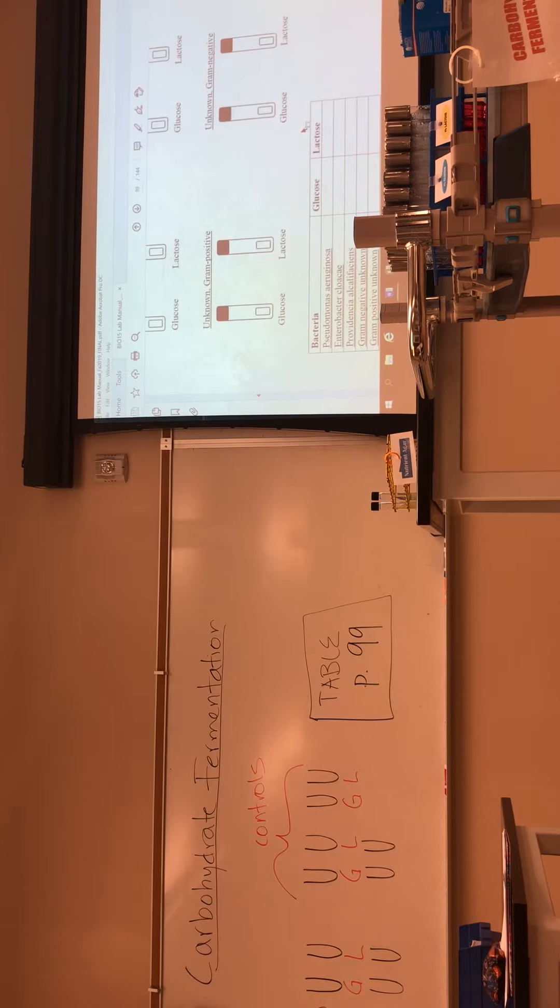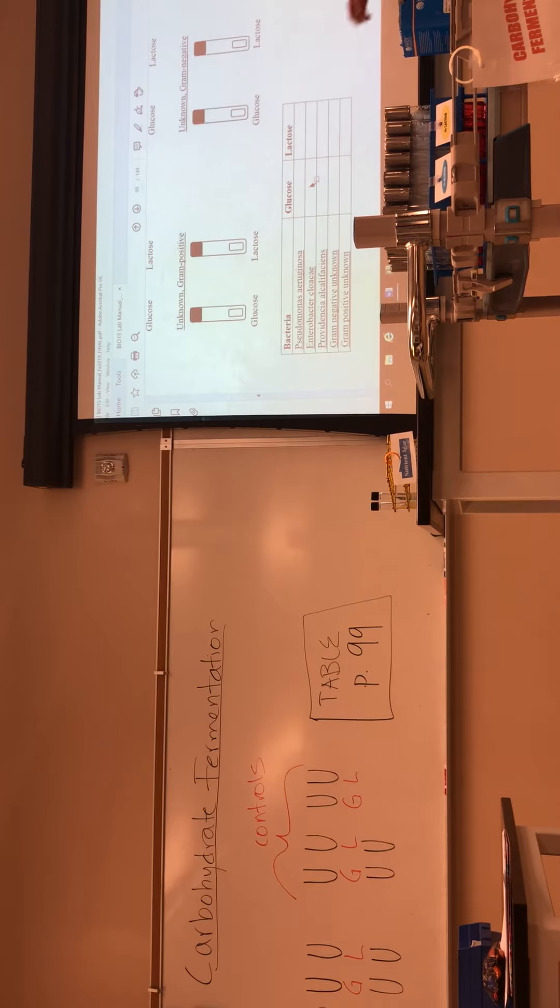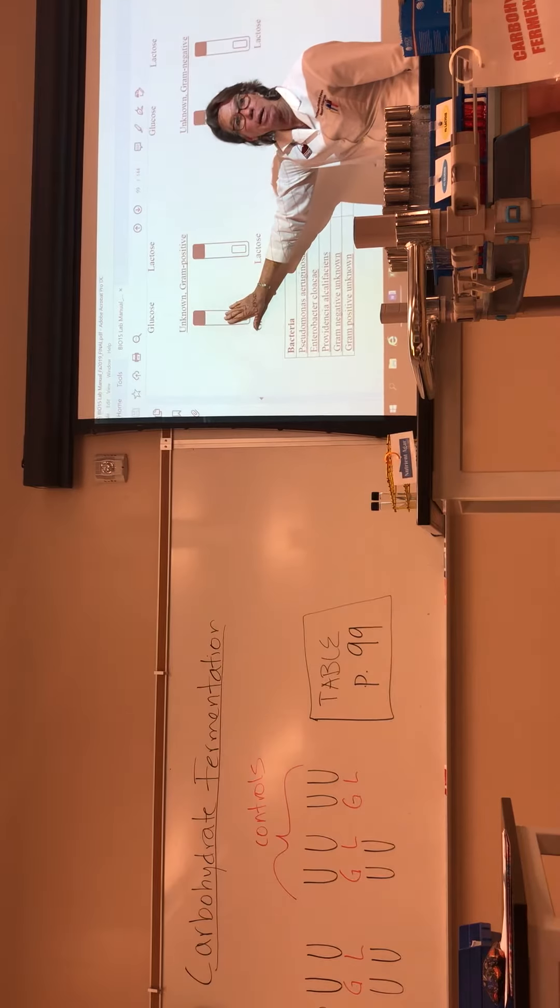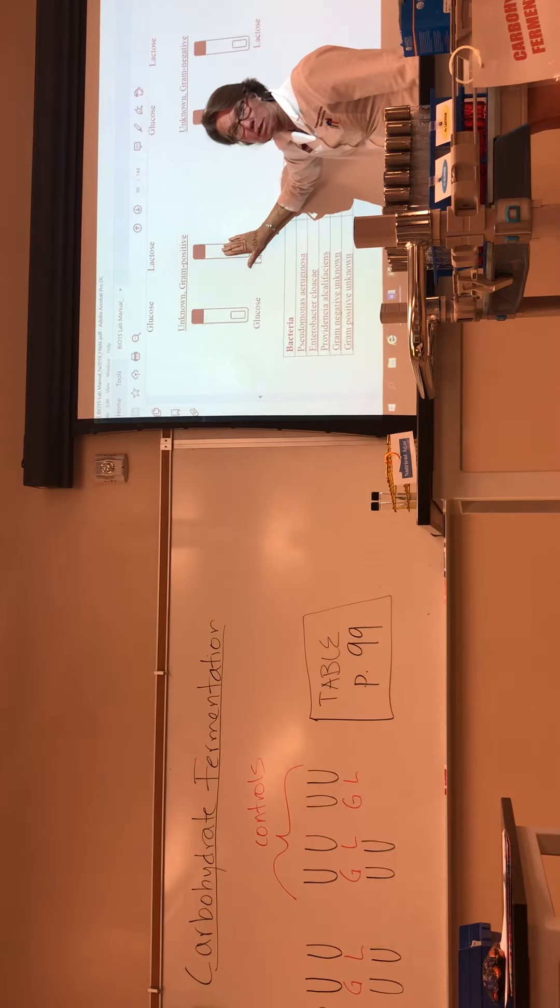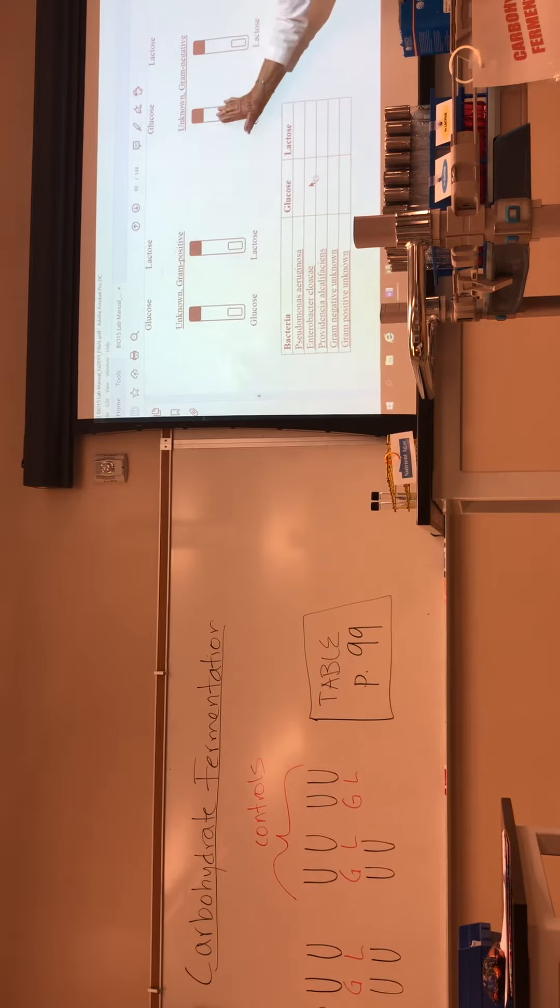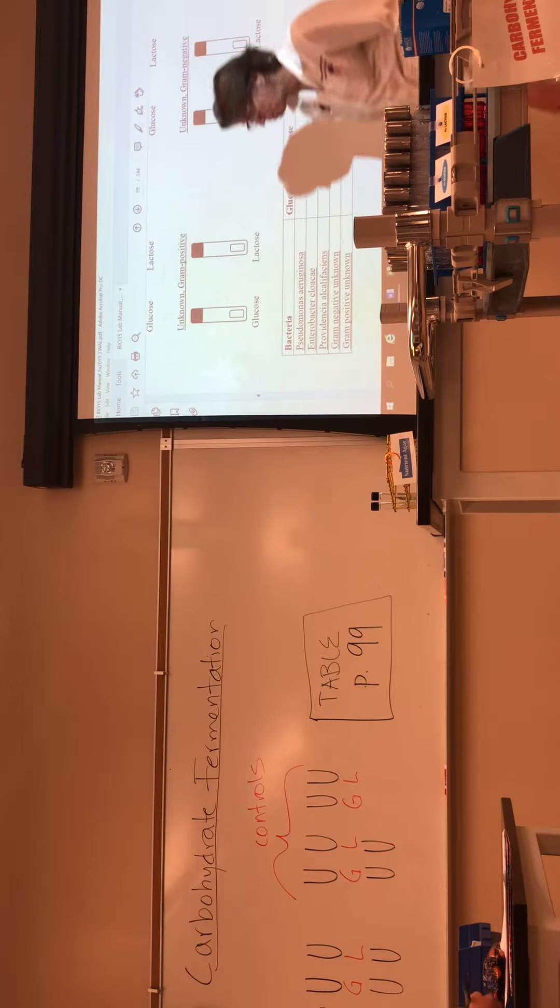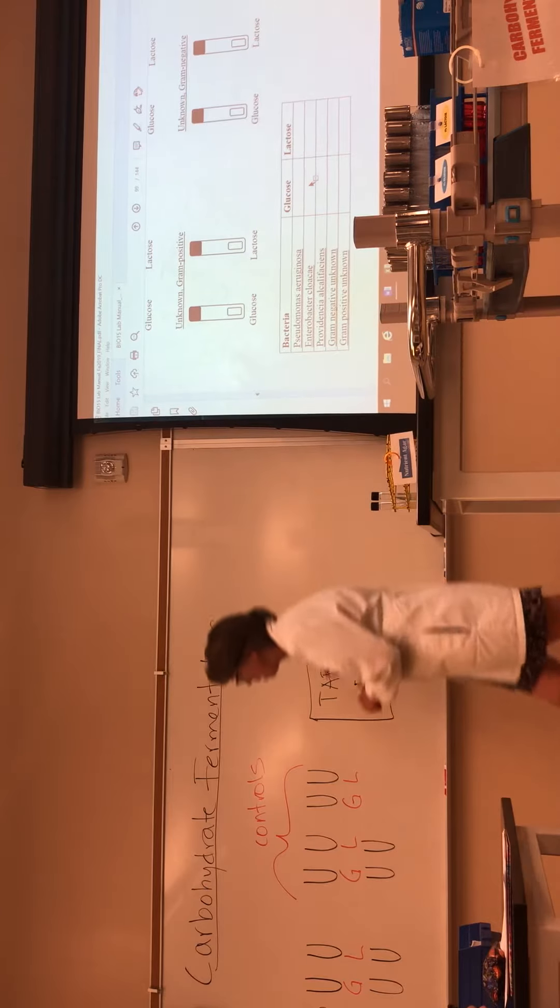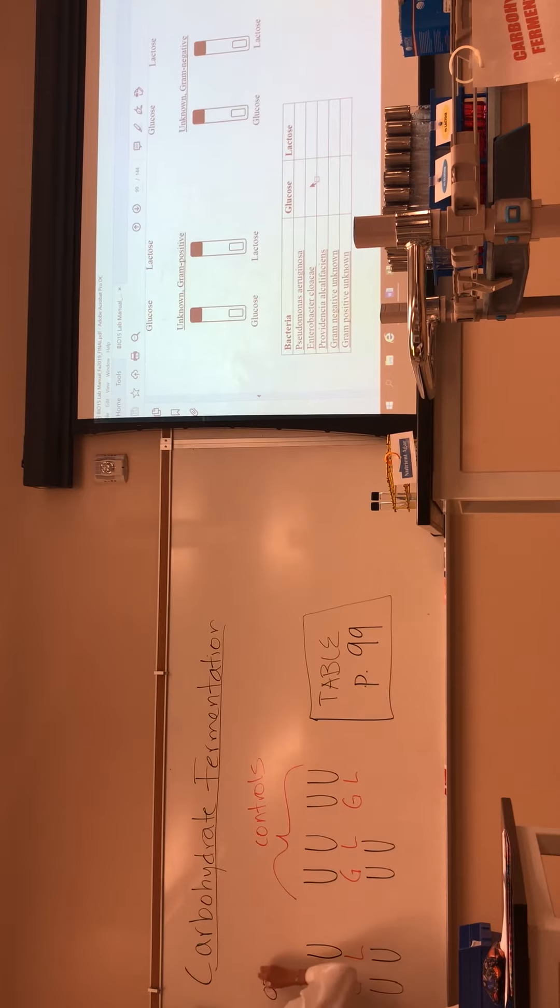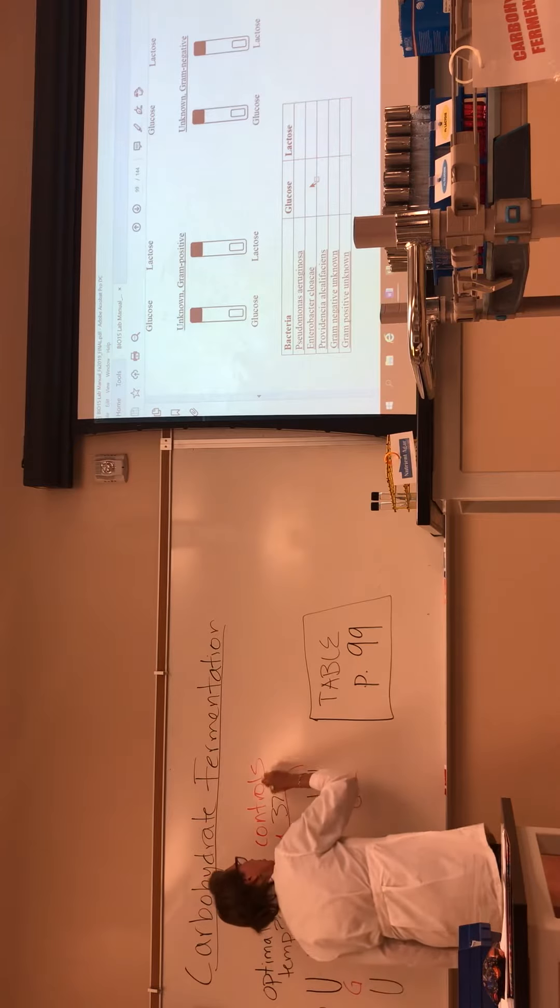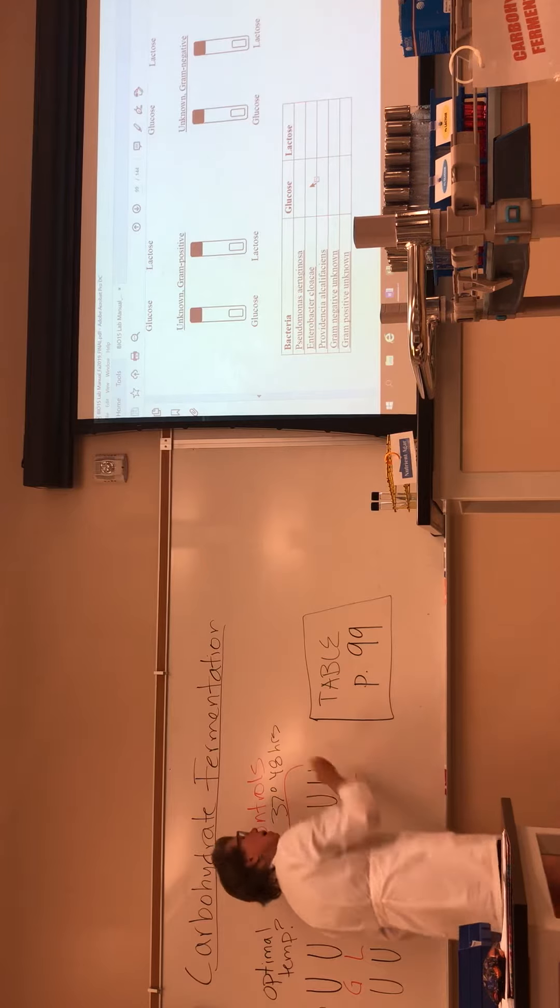What you have to do today is pretty simple. You're going to inoculate your gram positive into a glucose broth and a lactose broth, and your gram negative into a glucose broth and a lactose broth, at whatever you think your unknowns have for their optimal temperature. The controls are going at 37 degrees for 48 hours.